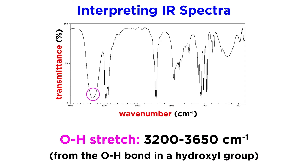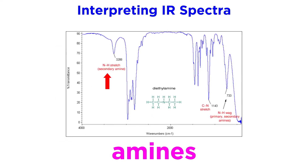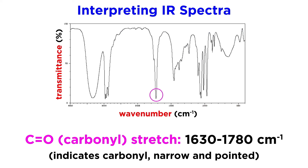Moving on to functional groups with heteroatoms, there is the hydroxyl stretch. This is perhaps the easiest to spot of any functional group, as the peak will be very broad and rounded, which is due to hydrogen bonding. If you see this — and you can't miss it — there is a hydroxyl group present. Amines have an NH stretch that is easy to spot as well, as it is much sharper and less intense than the hydroxyl stretch. Carbonyl-containing compounds are also easy to spot, as the carbonyl stretch is unmistakably long and narrow. The precise position of this stretch will help us determine what kind of carbonyl it is, whether aldehyde, ketone, carboxylic acid, ester, amide, or otherwise.